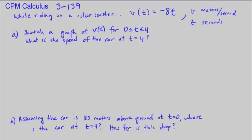This is CPM Calculus Chapter 3, number 139. While riding a roller coaster, the velocity in meters per second on a certain segment of track is represented by the function v of t equals negative 8t. Here we have v in meters per second and t is in seconds.